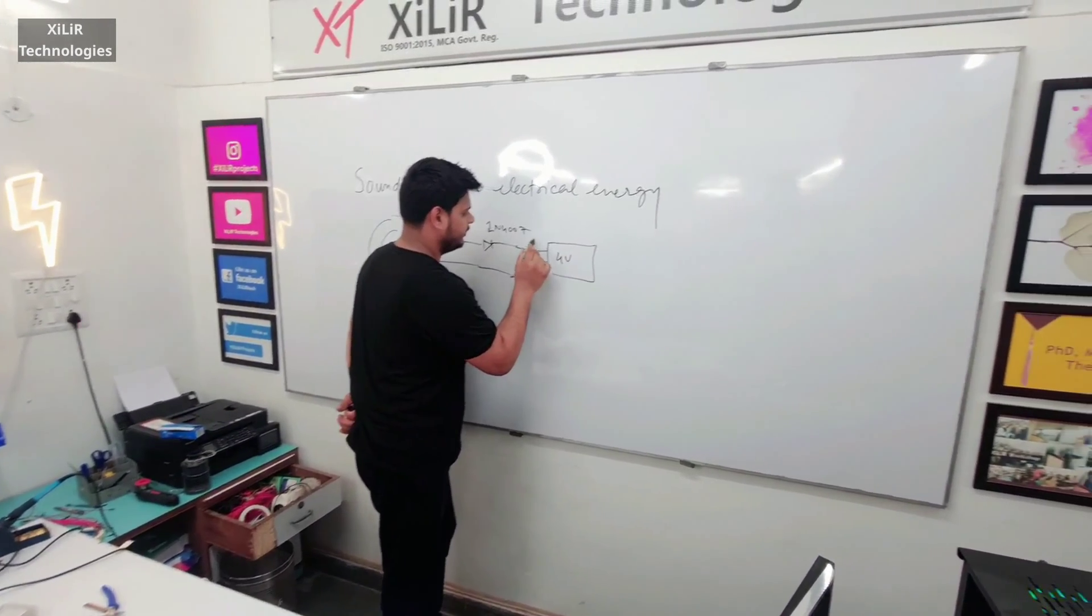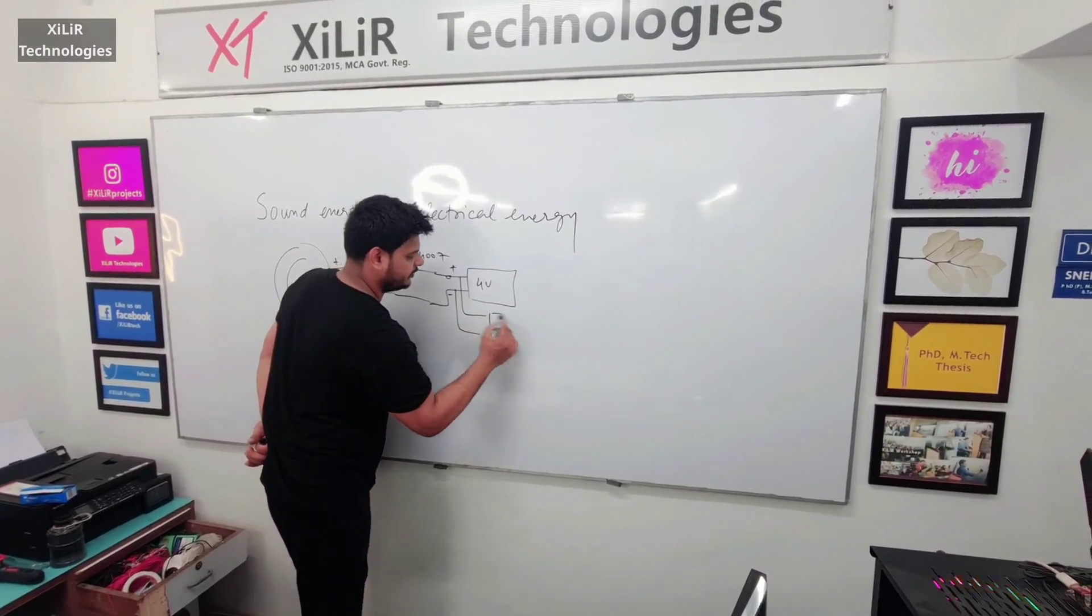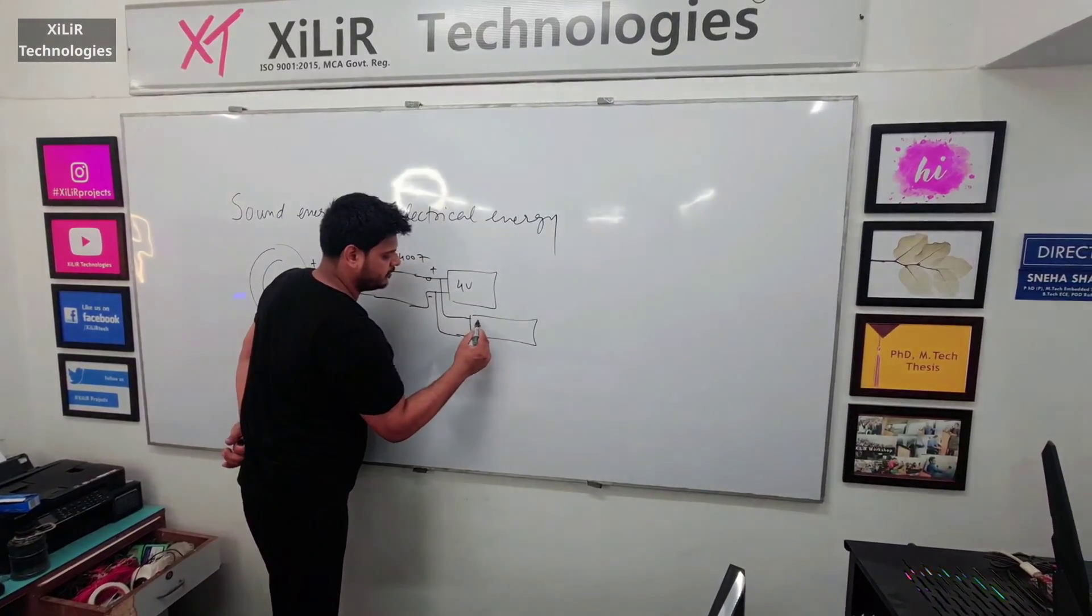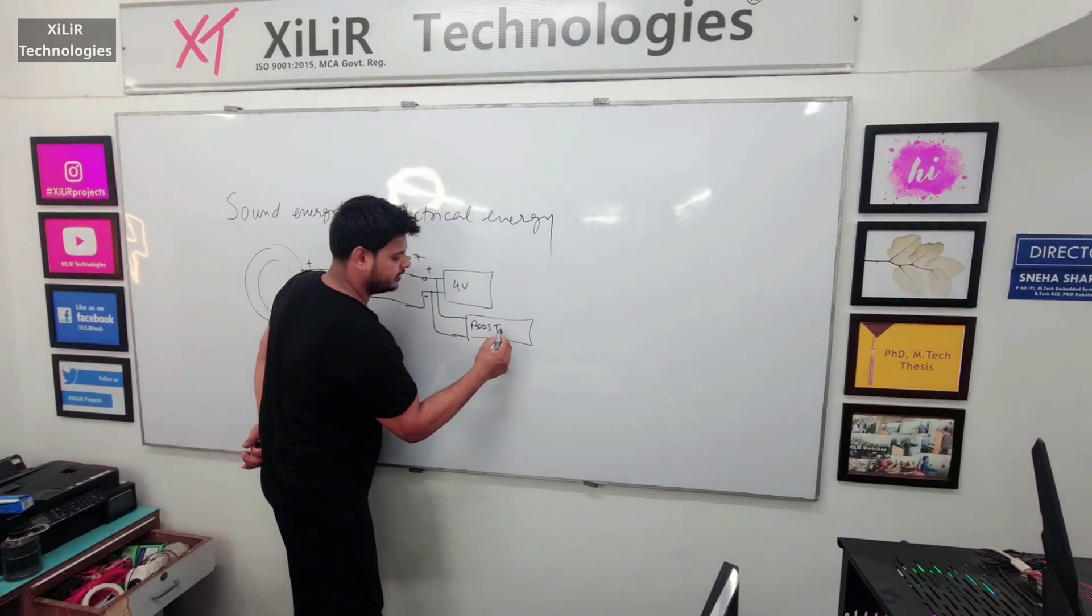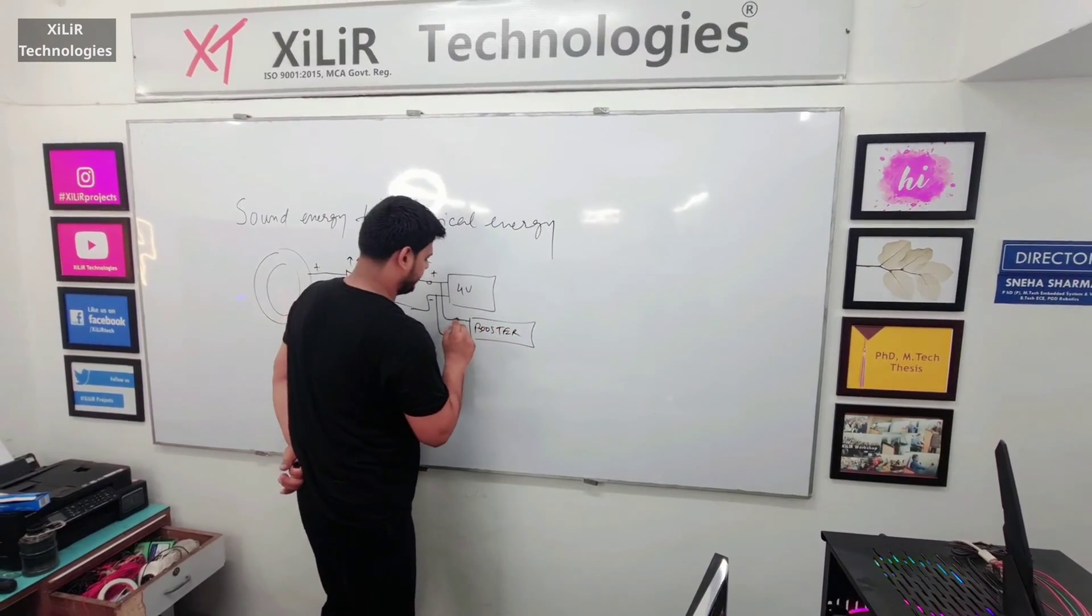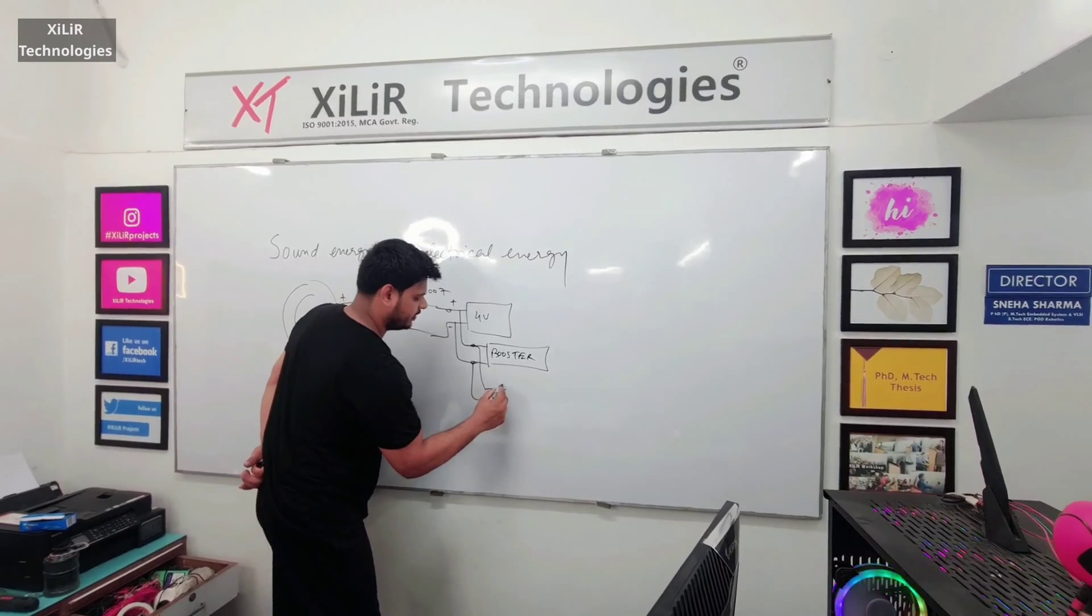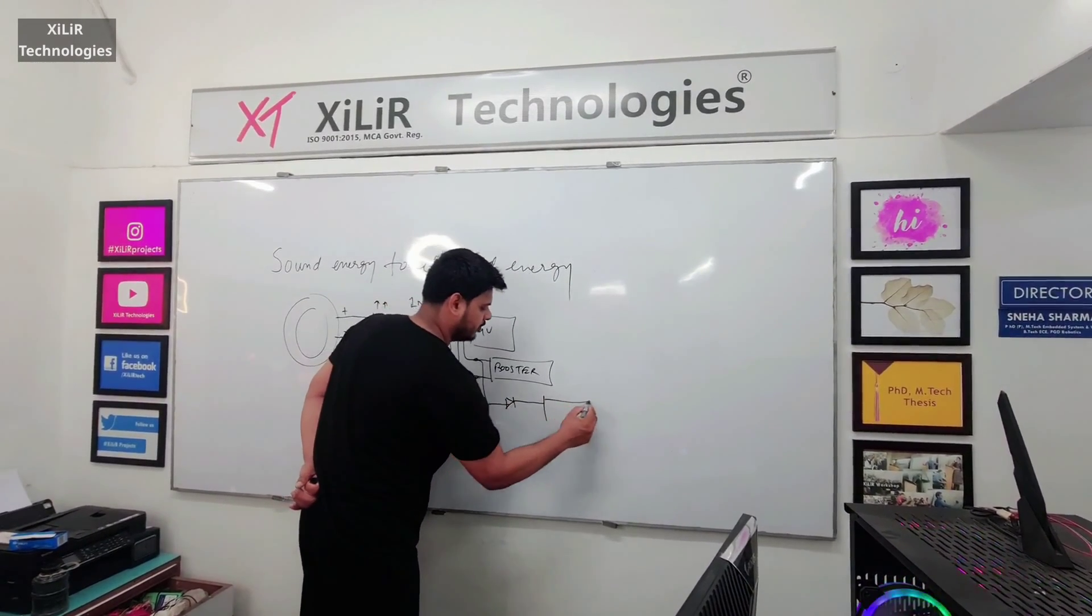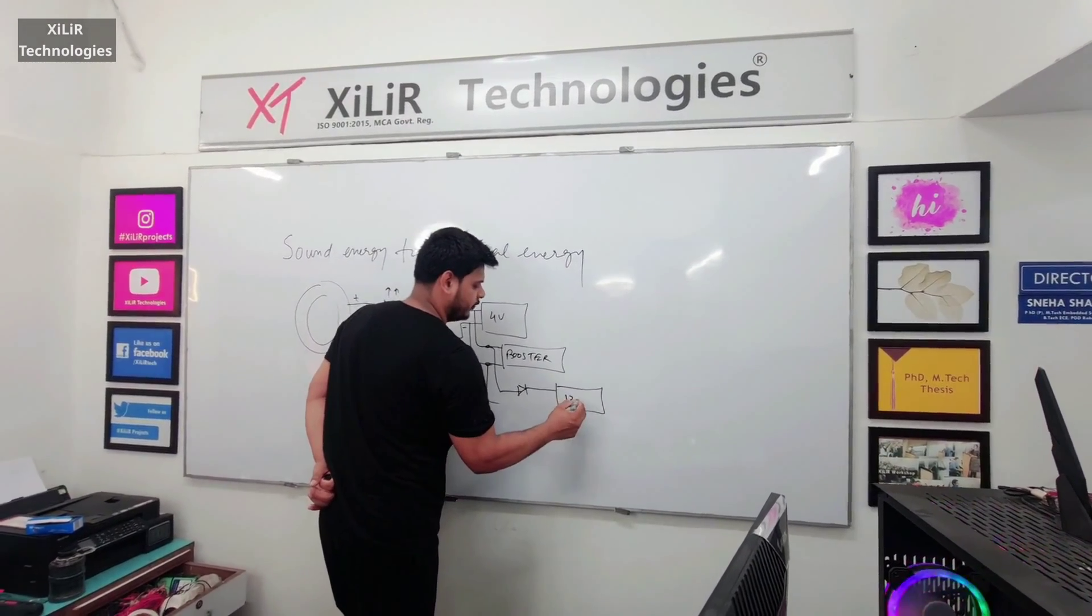We use the 4 volt battery, we are using one booster module, voltage booster, and after that this voltage booster again gives us 12 volt batteries.